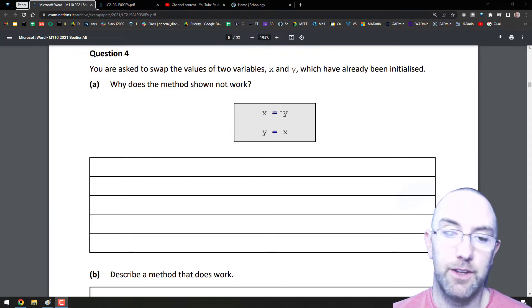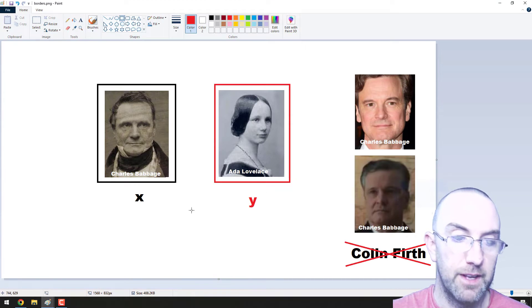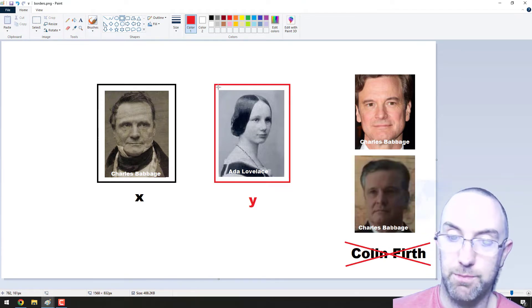The 2021 question asks why can you not just go x equals y, y equals x to swap these variables? Well, if you think about it, if I've got Charles Babbage here, the guy who made the difference engine, the first kind of early computer, and Ada Lovelace here on the right who made the first program, she was the first programmer.